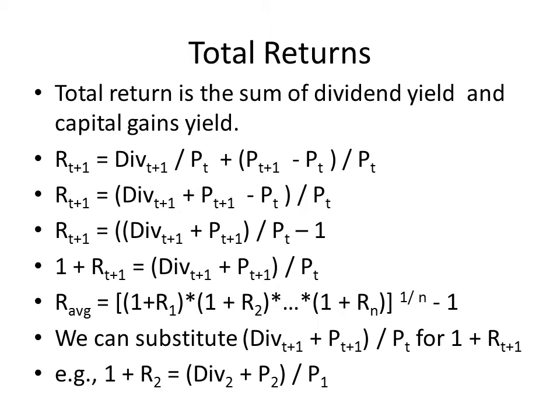Div t+1 over P sub t is your dividend yield, and P t+1 minus P sub t over P sub t is your capital gains yield.